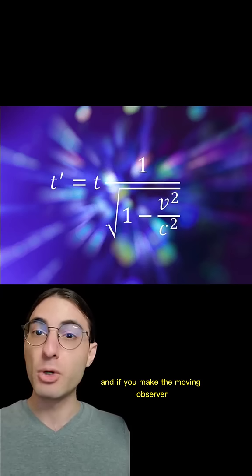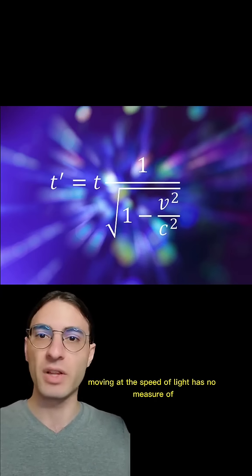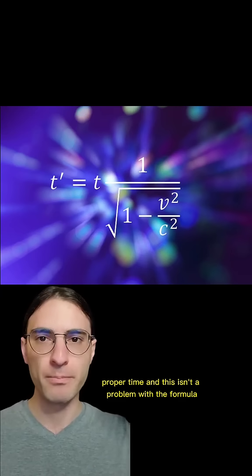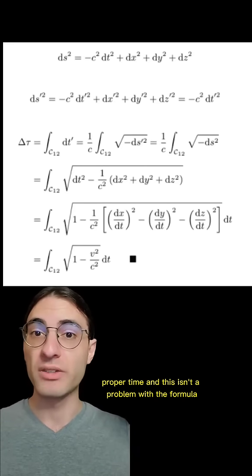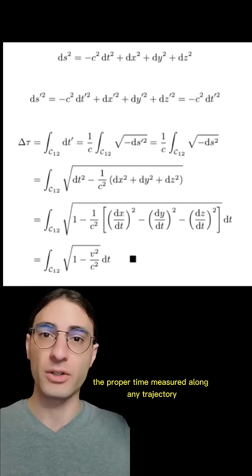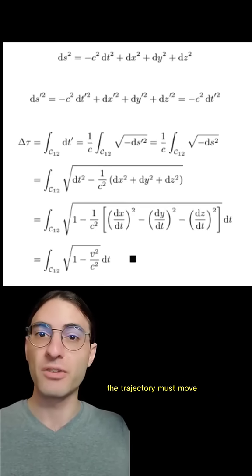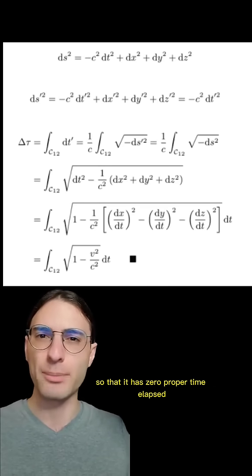And if you make the moving observer move at the speed of light, that formula spits out zero, meaning that anything moving at the speed of light has no measure of proper time. And this isn't a problem with the formula. It's true. There's a more technical way to determine the proper time measured along any trajectory. And in fact, we can define the speed of light as the speed at which the trajectory must move so that it has zero proper time elapsed.